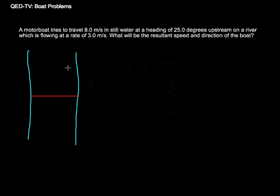In this particular problem, we have a motorboat trying to travel 8 meters per second in still water at a heading of 25 degrees upstream. So we know we're going to be going upstream at 25 degrees, trying to go at 8 meters per second. But it says there's a river flowing at a rate of 3 meters per second, and of course rivers flow downstream. I want to figure out what will be the resultant speed and direction of the boat.